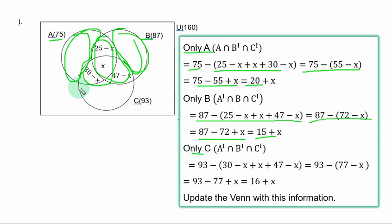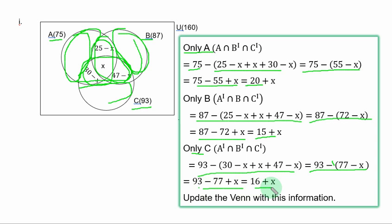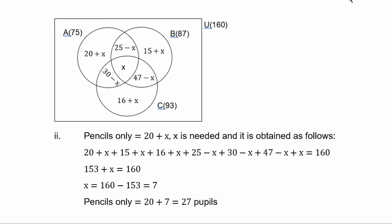Only C — that is the rulers-only region. As before, you add the three overlapping parts together and subtract from 93. That simplifies to 16 + S. We update the Venn diagram with this information, giving the complete Venn diagram. Remember, Roman numeral 2 asks for the number of pupils with pencils only, which is 20 + S. S is still needed and is obtained as follows.